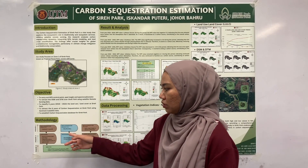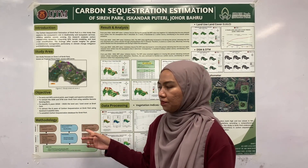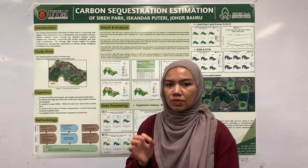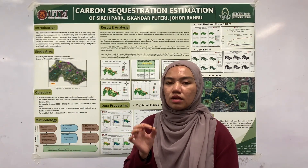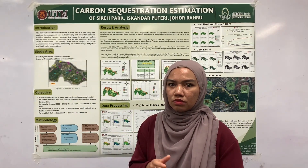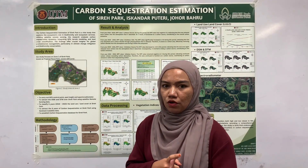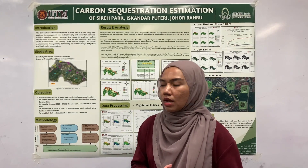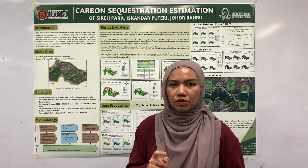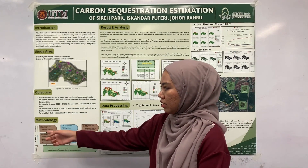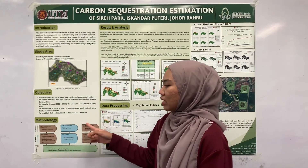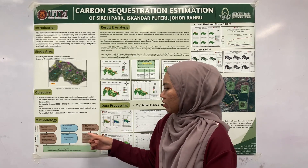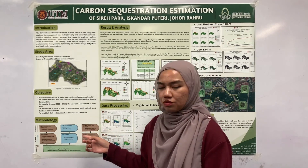For secondary data, we have boundary data and also fieldwork data. For primary data with Sentinel, we use open source data. We download imagery with cloud coverage below 20% and use 20-meter resolution for the Sentinel data. For data acquisition fieldwork, we collect ground control points, spot height, and spectral radiometer data.